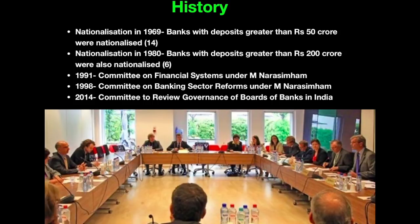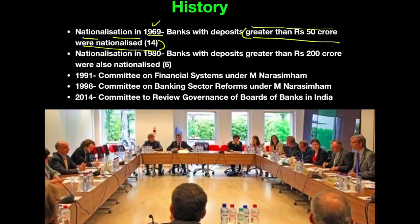To talk about history, let us take very briefly the nationalization which took place in 1969. Banks with deposits greater than Rs. 50 crore were nationalized, and a total of 14 banks were nationalized in the year 1969. Almost all of you would know that the first phase of nationalization started in 1969, but very few would know that only banks with deposits greater than Rs. 50 crore were nationalized, and the total was 14 banks.